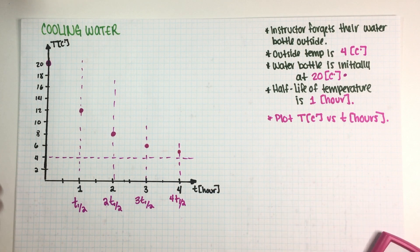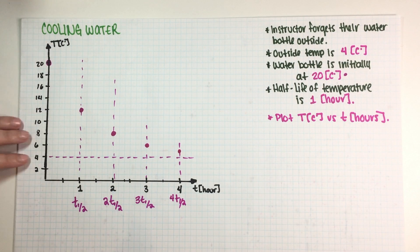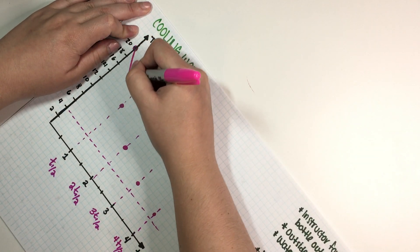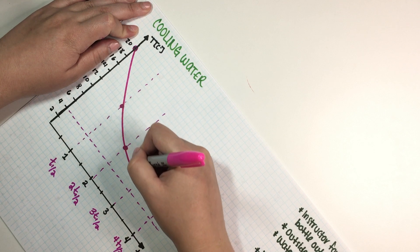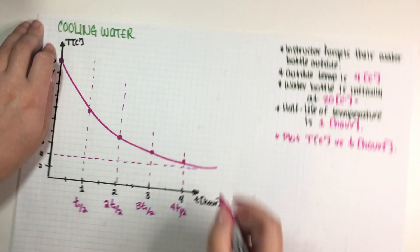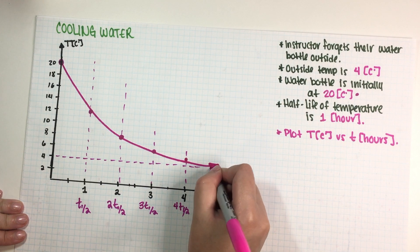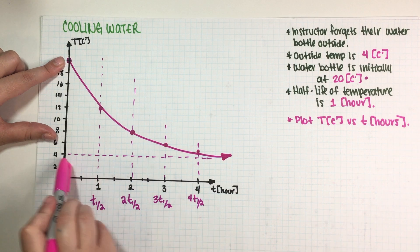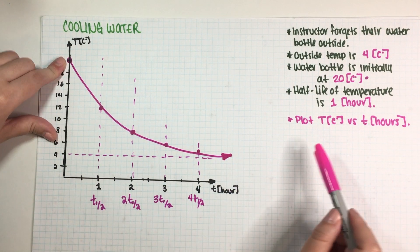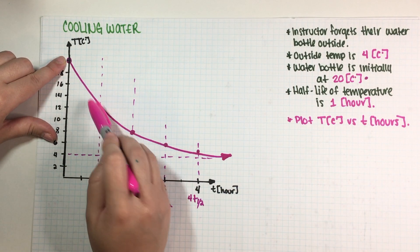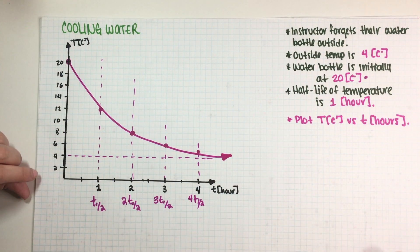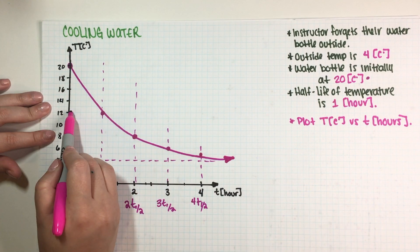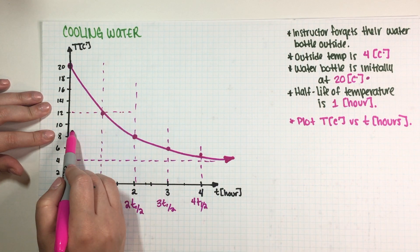So we have enough half-lives to go ahead and get full credit for our answer. So my graph should just be... there we go. And this is gonna get full credit because I have a correct initial value, I have a correct final tendency, they were asking me for at least three half-lives and I did four, so clearly I have more than enough to get full credit for this answer.